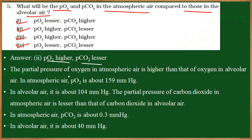The partial pressure of oxygen in the atmospheric air is always higher when compared to the partial pressure of oxygen in the alveoli. In the atmosphere, the partial pressure of oxygen will be 159 millimeters of mercury, whereas in the alveoli the partial pressure of oxygen will be 104 millimeters of mercury.